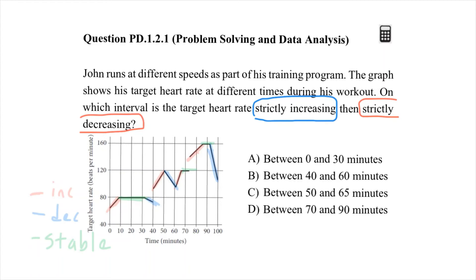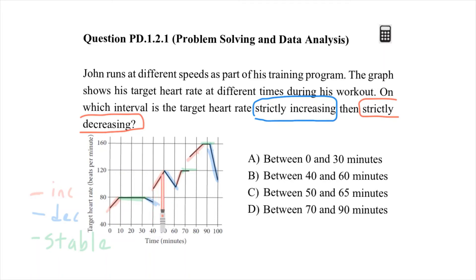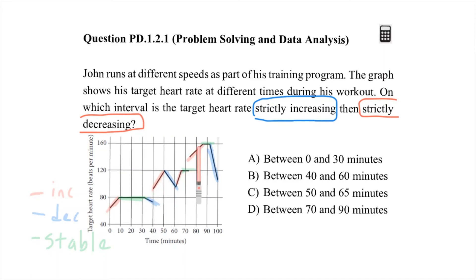What I'm looking for is: target heart rate strictly increasing, then strictly decreasing. All the red segments are increasing, but 'strictly increasing' matters — some lines have a steeper slope than others. The one with a higher slope is more strictly increasing. So I need to find a segment that is strictly increasing followed by strictly decreasing.